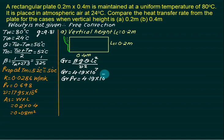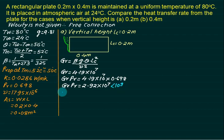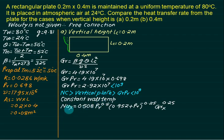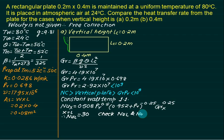GrPr = 4.19×10⁷ × 0.698 = 2.97×10⁷, which is less than 10⁹, so flow is laminar — vertical plate with laminar flow. Using the constant wall temperature correlation: Nu_x = 0.508 × Pr^0.5 × (0.952 + Pr)^(−0.25) × Gr_x^0.25. Substituting Pr = 0.698 and Gr = 4.19×10⁷ (at x = L): Nu_L = 30.